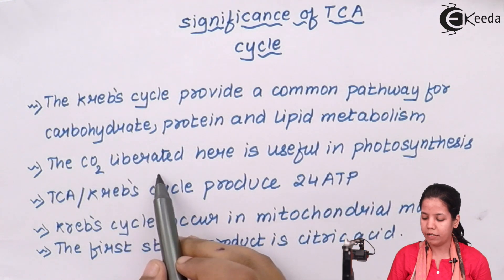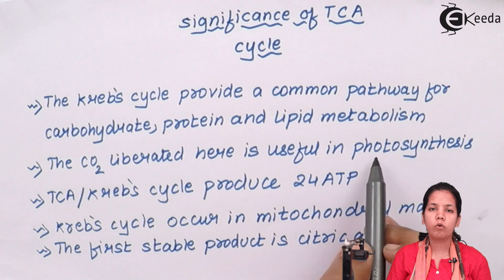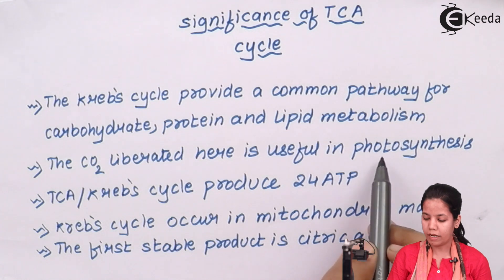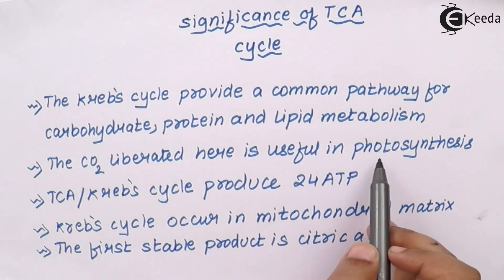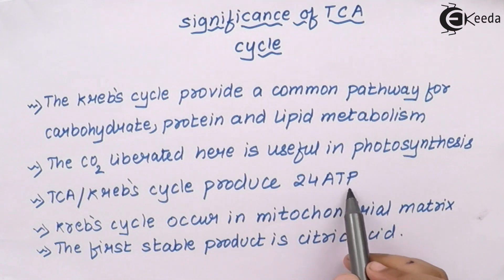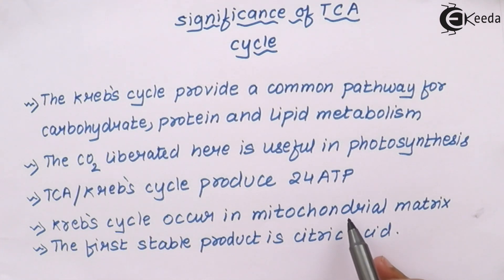The CO2 or carbon dioxide liberated in this process is very useful for the process of photosynthesis, which uses CO2 as a raw material to synthesize glucose. So the respiration process provides CO2 for photosynthesis. TCA cycle or Krebs cycle produces 24 adenosine triphosphate molecules, which are energy-giving molecules. Krebs cycle occurs in the mitochondrial matrix, where the ATPase machinery is situated, and mitochondria is called the powerhouse of the cell.